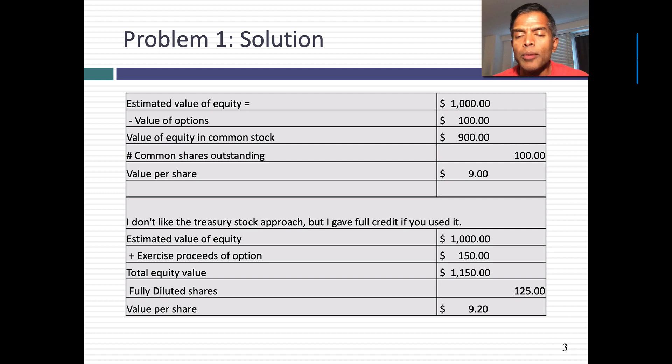You subtract out the value of the options. Remember, your 25 million options, $4 per option. That's $100 million. You get a value of equity in the common stock of $900. Divide that $900 million by just the outstanding shares. Don't bring in the options. 100 million shares. You get a value per share of $9. That, in my view, is the right way to do things.